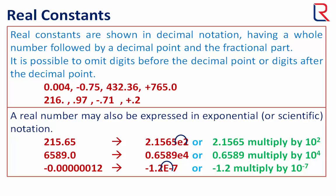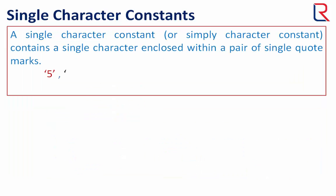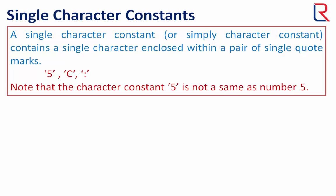Single character constants: A single character constant contains a single character enclosed within a pair of single quote marks. Note that the character constant with single quotes, '5', is not the same as number 5.